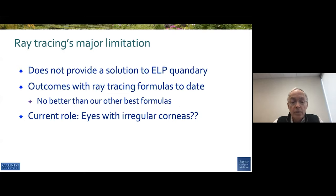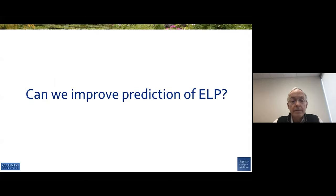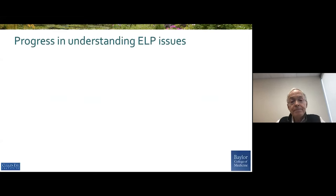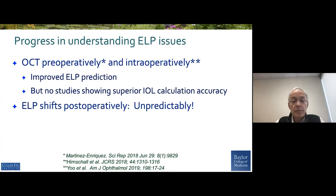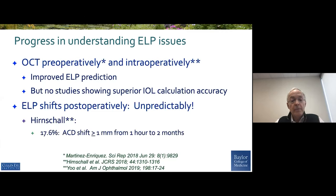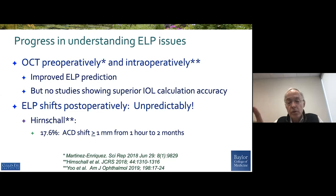I think they currently should have a special role for those eyes with irregular corneas, and they do great with long eyes. Can we improve our prediction of ELP? There have been studies using OCT on eyes preoperatively and intraoperatively, but none have shown better or more accurate IOL calculations. And unfortunately ELP shifts postoperatively — 17.6% of eyes had a shift in anterior chamber depth of one millimeter or more from one hour measured postoperatively to two months. So we can put it where we think the right spot is, and it may shift as the eye heals and the capsule contracts.